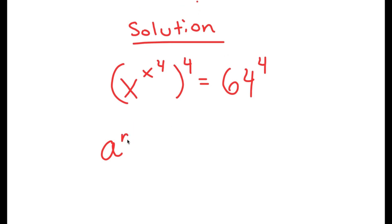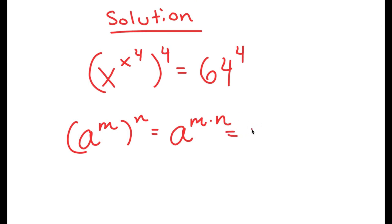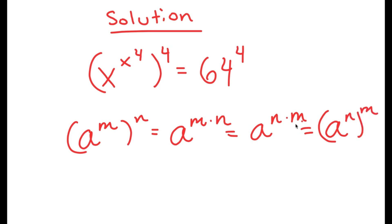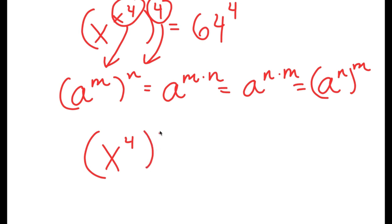If I have something in the form a to the power of m to the power of n, this equals a to the power of m times n. However, m and n are interchangeable, so this can also be written as a to the power of n to the power of m. So in x to the power of x to the power of 4 to the power of 4, I think of x to the power of 4 as m and 4 as n, which turns into x to the power of 4 to the power of x to the power of 4, equal to 64 to the power of 4.